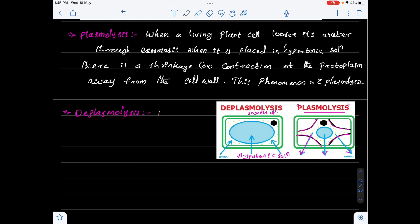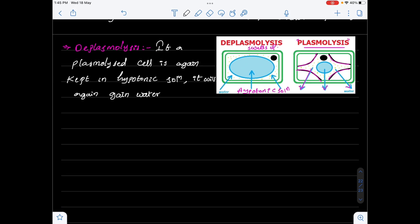If a Plasmolyzed cell is again kept in hypotonic solution, it will again gain water due to endosmosis, and the cell would become turgid.